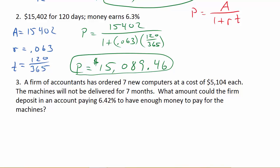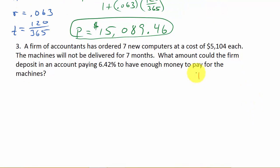Alright, so let's see. Let's write our formula down. So we have P is equal to A over 1 plus RT. Alright, so now I need A. Well, that's equal to 7 times 5,104. Okay, because there's seven computers and they're 5,104 each. So that's a total of $35,728. That's the total amount we need. Okay, so the interest rate, R, is 6.42. So that's 0.0642, that's R. T, well, that's seven months, but we have to write it in years. So that's the 7 over 12.